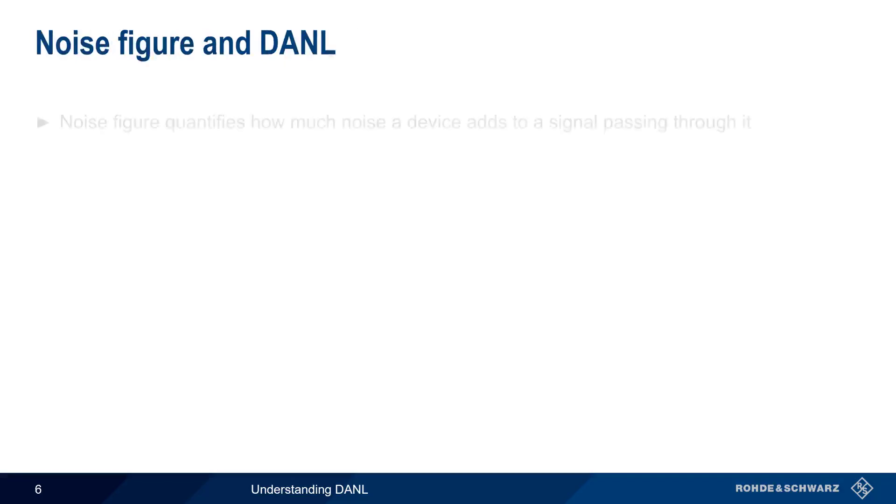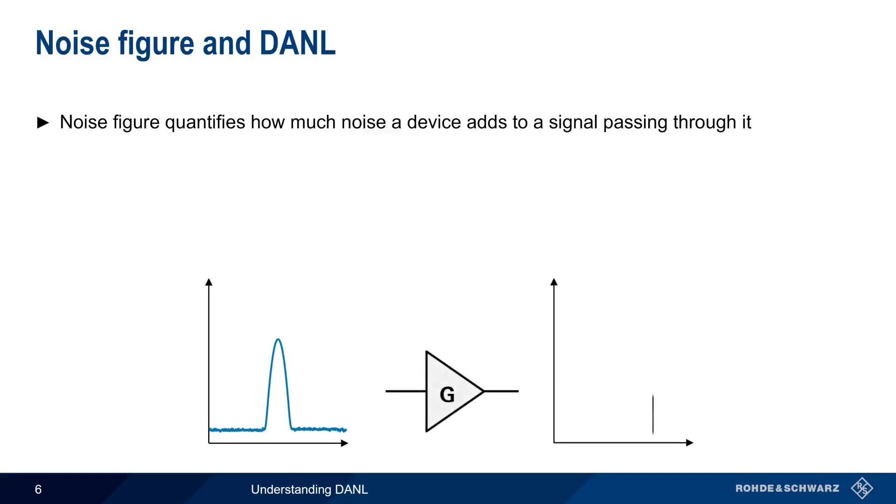Let's start with noise figure. Noise figure is used to quantify how much noise is added to a signal as it passes through a device or component. For example, if a signal enters a spectrum analyzer and then passes through one of the amplifiers along the analyzer's internal signal path, the amplitude of both the input signal and the input noise will be increased by the gain of the internal amplifier. However, like all real-world devices, the amplifier will also add some of its own internal noise to the signal.